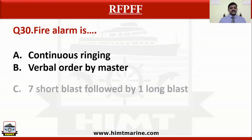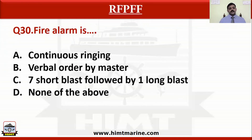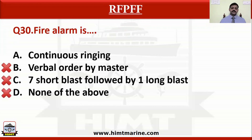Question number 30: Fire alarm is — option A continuous ringing, option B verbal order by the master, option C seven short blasts followed by one long blast, option D none of the above. The correct answer is option A — the fire alarm is continuous ringing.